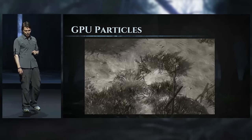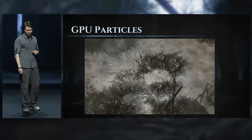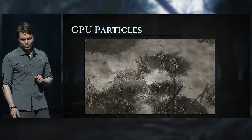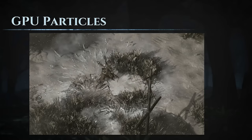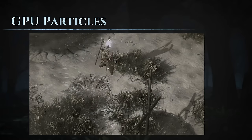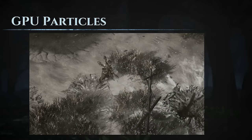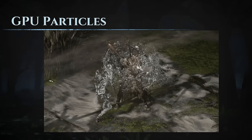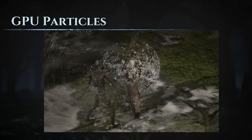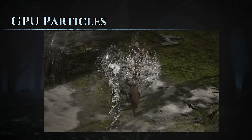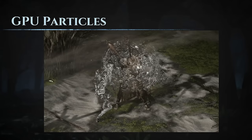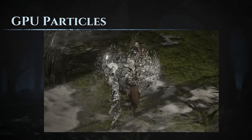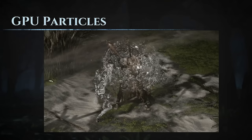Here's another example of GPU particles. When the meteor strikes or the nova strikes, there's a whole bunch of particles advected by the shock wave. And this player skill with an ice shield — those ice particles react to players moving and to attacks from monsters.